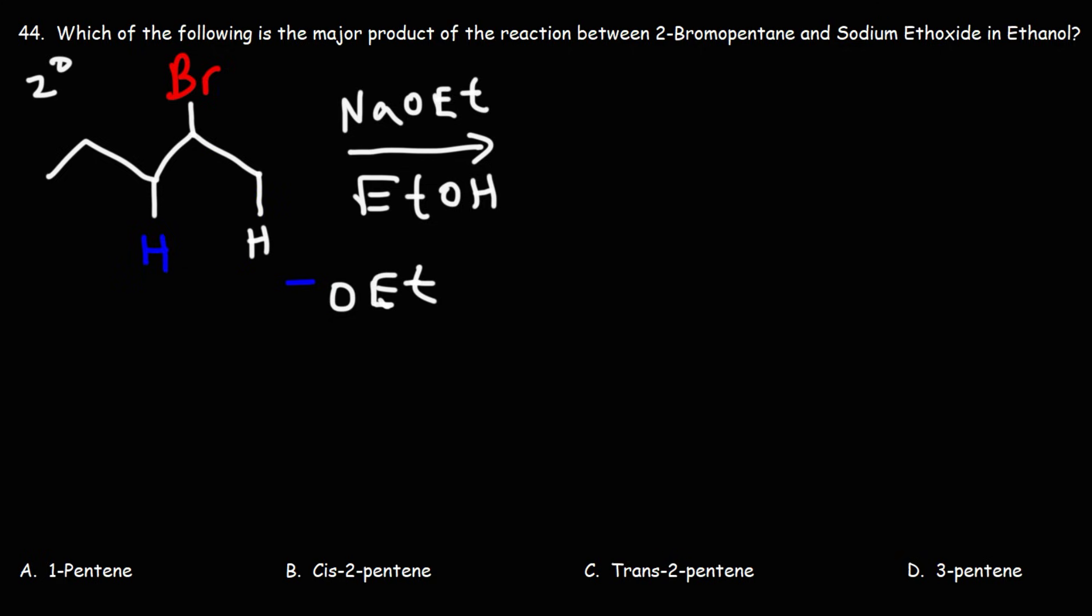So if the strong base removes the white hydrogen, we'll get 1-pentene as a product.